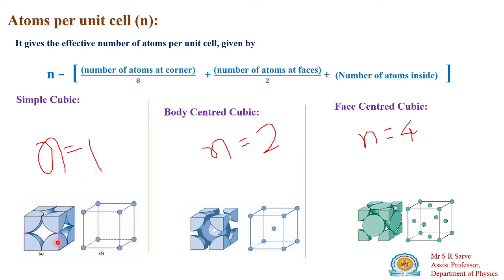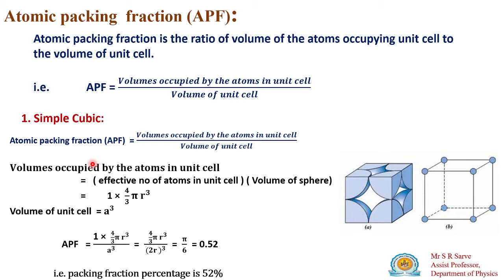So the total effective atoms in a simple cubic unit cell is n = 1, since each corner atom contributes 1/8 and there are 8 corners. Now, to calculate the atomic packing fraction: the volume occupied by atoms in the unit cell equals n times (4/3)πr³. Since this is a cubical unit cell, its total volume is a³. So APF equals (1 × 4/3 × π × r³) divided by a³.